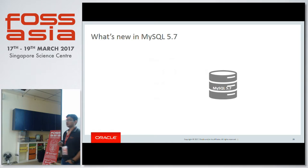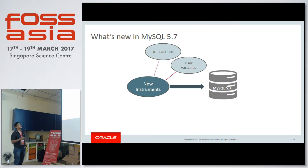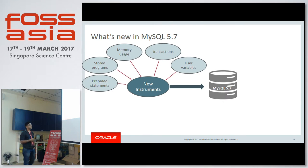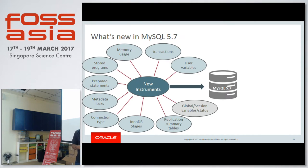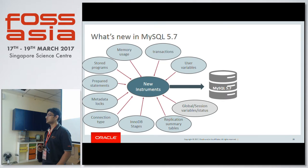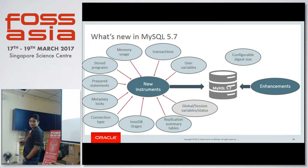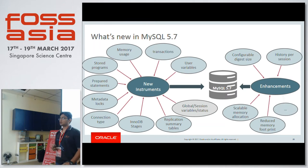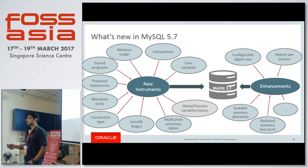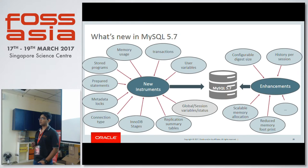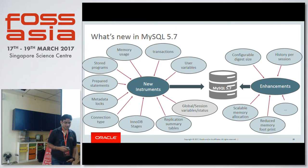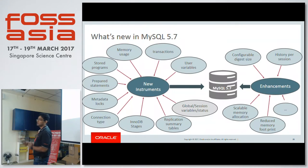In MySQL 5.7, released GA in 2015, we added many new instruments: user variables, connections, memory usage, stored programs, prepared statements, MDL types, connection types, InnoDB execution stages, application summary tables, and global/session variables and status. We also introduced enhancements: configurable digest size (was fixed in 5.6), ability to selectively collect historical statements for specific threads, scalable memory allocation for Performance Schema buffers (was fixed before), and reduced memory footprint.